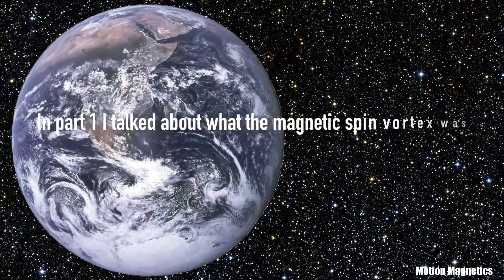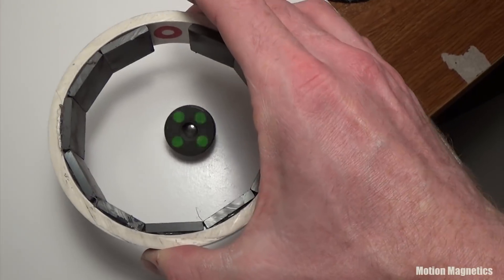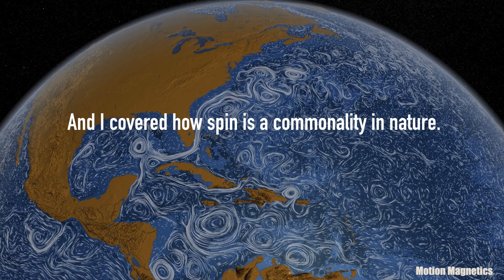In part 1, I talked about what the Magnetic Spin Vortex was, what it's not, and I covered how spin is a commonality in nature.